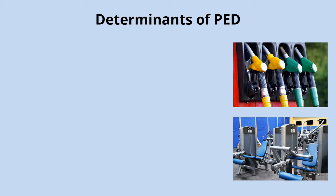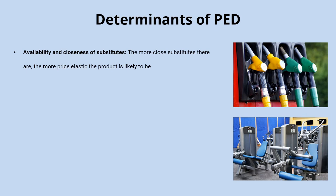Now let's look at what determines how price elastic or price inelastic a product is likely to be. The first factor is the availability and closeness of substitutes. Petrol is likely to be relatively price inelastic because there are very few substitutes for putting petrol in your car. By contrast, gym memberships have quite a few alternatives — you could go for a run, play team sports, or work out at home. The more substitutes there are, the more price elastic a product is likely to be.